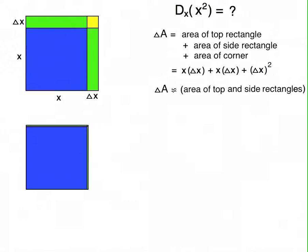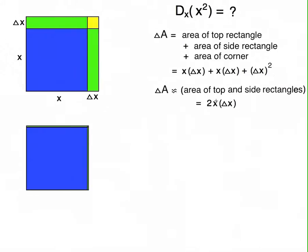And, as we've already said, those two areas are the same. They're both x times delta x, so all together this is 2x delta x. Delta A is pretty much 2x times delta x, and that's more and more accurate the closer delta x gets to zero.